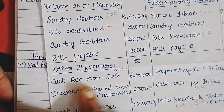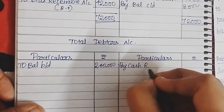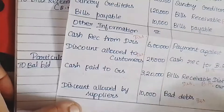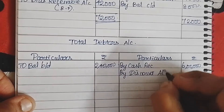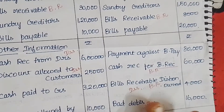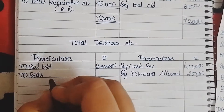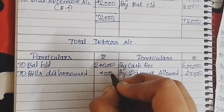Cash received from debtors is 6,00,000. By cash received — 6,00,000. Next, discount allowed to customer — 25,000. By discount allowed — 25,000. Next, bills receivable dishonored — 4,000 — on the debit side. By bills dishonored — 4,000.